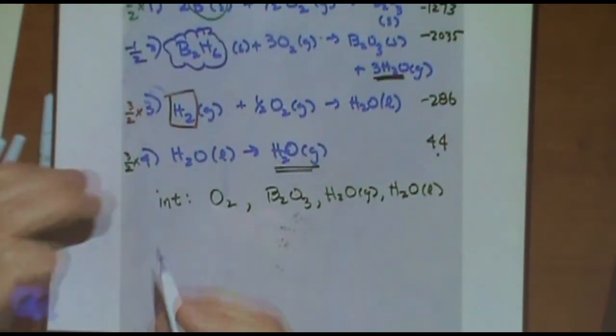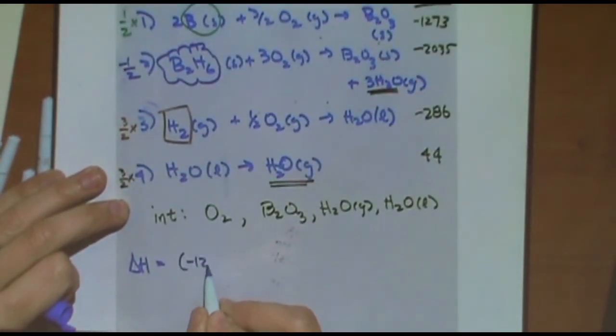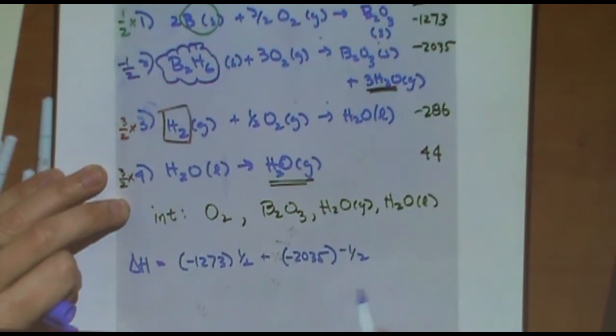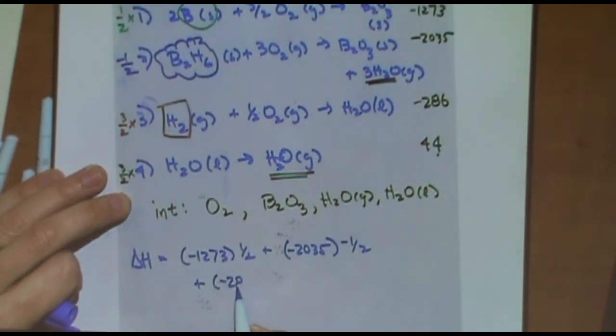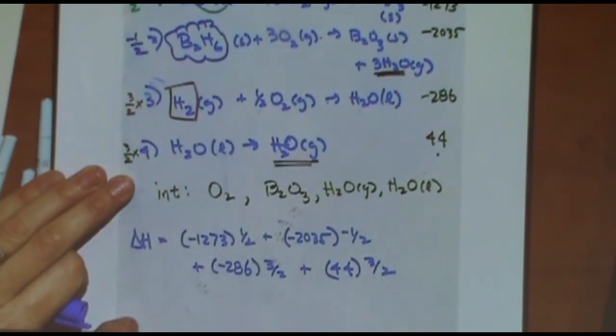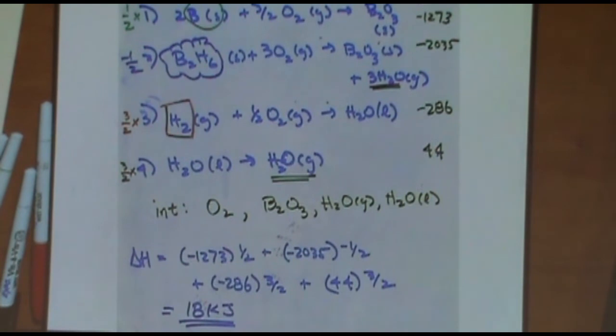So now I'm ready for my math. Let's do that. The delta H for the overall reaction. I'm just basically adding things up. It'd be minus 1273. Its multiplier was one half for that reaction. And then I've got the minus 2035. That multiplier was minus a half. Then I've got the minus 286. That multiplier was three halves. And then the 44. That multiplier was three halves. Well, did I mess this side up? I think that's okay. Yeah. I think I got it all right. Let's see. I calculated this earlier. I got 18 kilojoules is my final answer. Questions on this? Once I have a multiplier in all four reactions, I'm done.